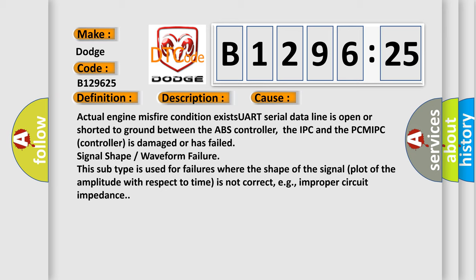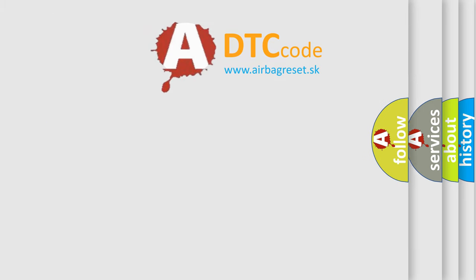This subtype is used for failures where the shape of the signal, plot of the amplitude with respect to time, is not correct, e.g., improper circuit impedance.